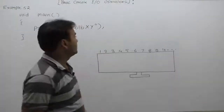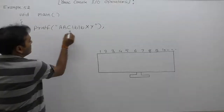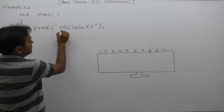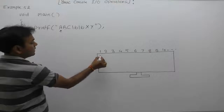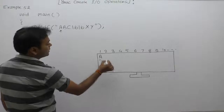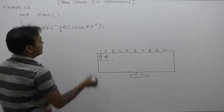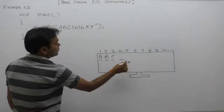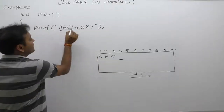In this next example code, we are displaying some message using the printf function. First, printf prints character 'a' at the current cursor position. After printing 'a', the cursor moves to the next position, then it prints 'b', cursor moves again, then it prints 'c'. After displaying 'c', the cursor moves to the fourth position.